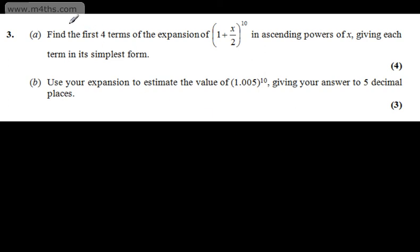This is question number 3. In part A, we're asked to find the first four terms of the expansion of (1 + x/2)^10 in ascending powers of x, giving each term in its simplest form. The question carries formulas. I'm going to use the NCR method to find my coefficients.